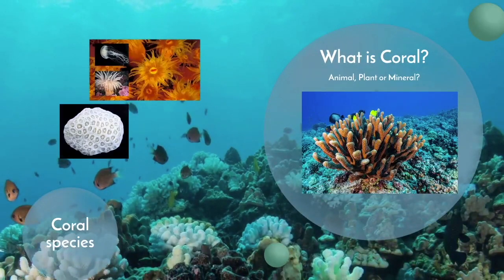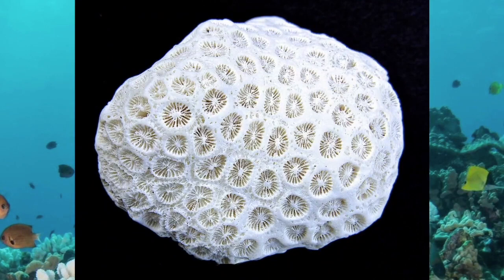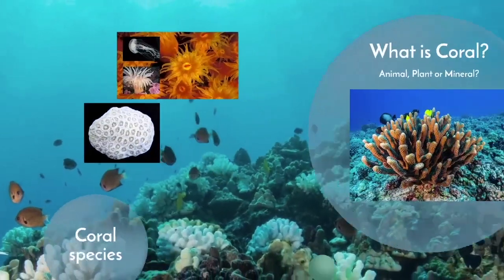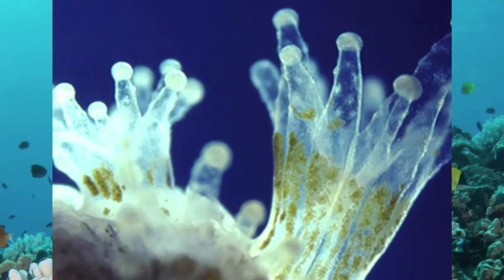Coral secretes a hard outer skeleton of limestone or calcium carbonate that attaches either to the rock or the dead skeleton of other polyps. Each individual you see is one coral polyp. One colony is made up of hundreds of thousands of tiny coral polyps and creates the structures we know as coral reefs. You've probably seen coral skeletons on the shoreline. The last component, and likely the most important, is the mutualistic relationship corals have with a single-celled algae called zooxanthellae.